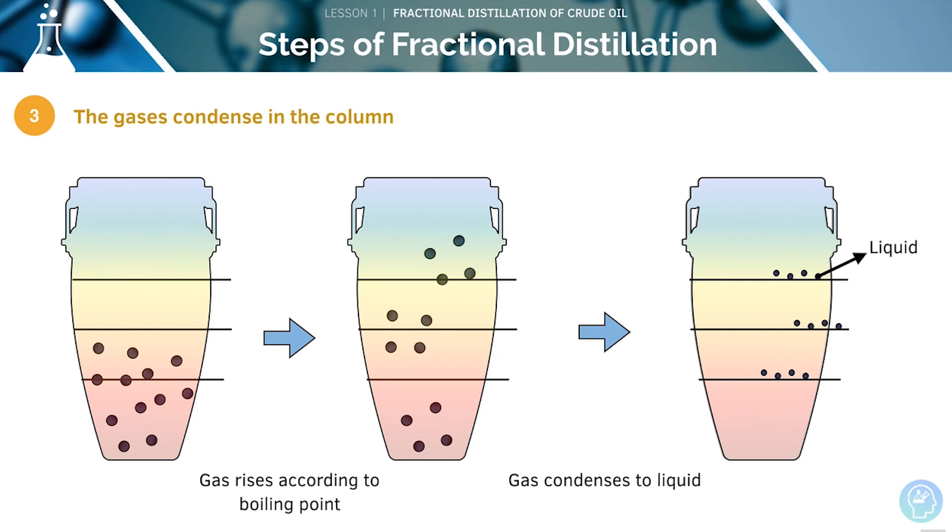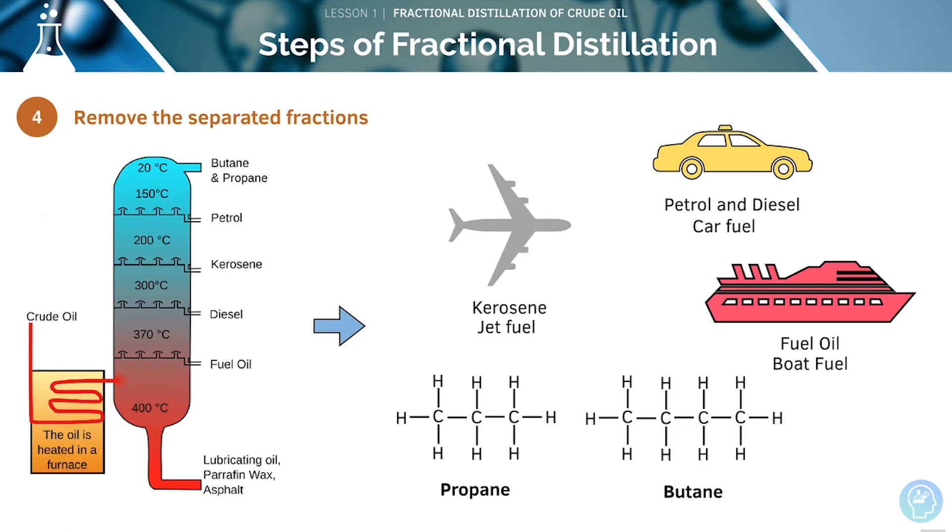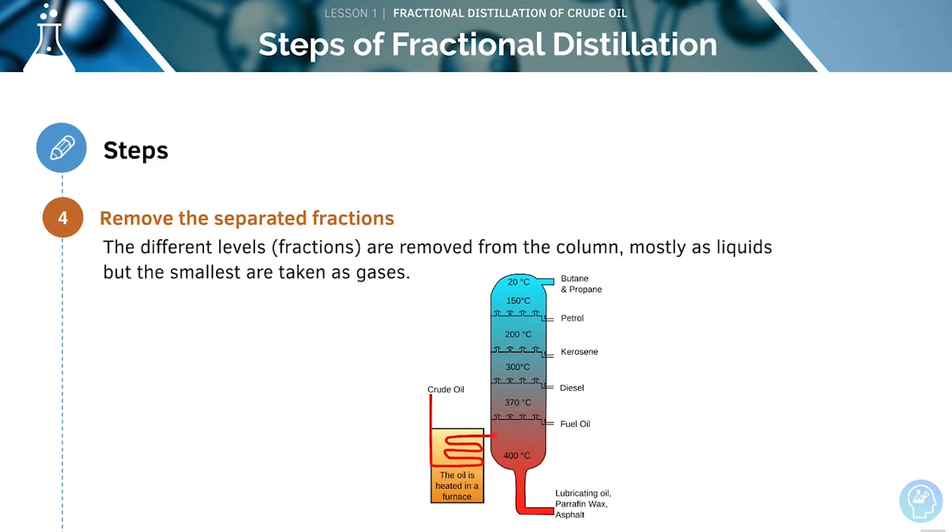Next, the gases rise up the column and as they do so, they liquefy. They are prevented from falling back down the column by bubble caps. The different levels, or fractions, are removed from the column. This occurs mostly as liquids, but the smallest are taken as gases.